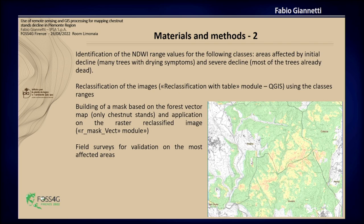After that, we identified two range values of the index for two classes: the areas affected by initial decline, in which many trees have drying symptoms, and areas in which the decline is much more severe and most of the trees are already dead.